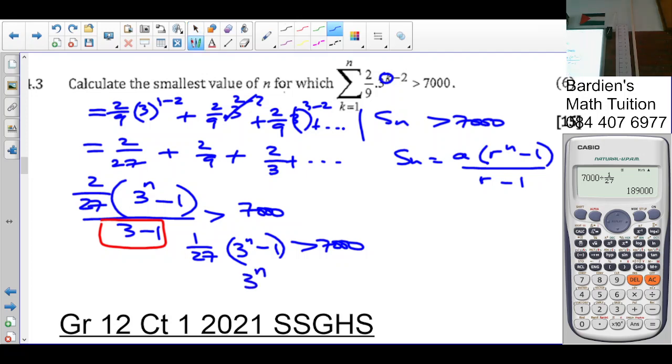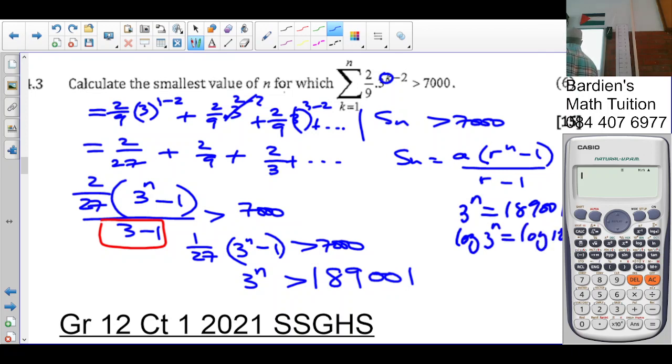So 3 to the N minus 1 has to be greater than 189,000. Now we take the 1 over the equal sign becomes plus 1. So it's 189,001. So at this point we can then see what the number can be written as. So in this case we need to use logs. So what we do on the side is we say 3 to the N equals 189,001. We log both sides. So it gives log 3 to the exponent N is equal to log 189,001.